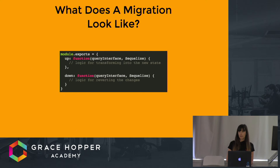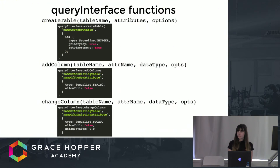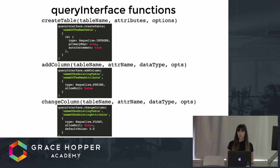You write all of these modifications off of the query interface object. Some examples of these functions are create table, add column, and change column. You can see that it looks a lot like the structures that you're used to writing inside of your Sequelize model file.